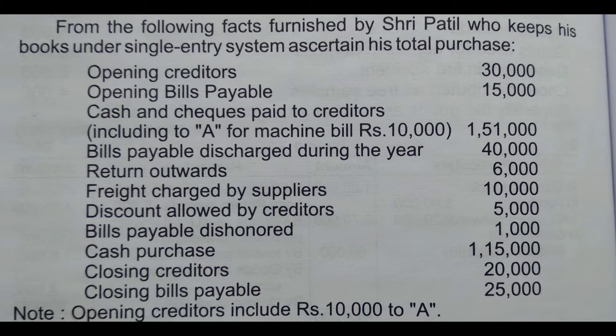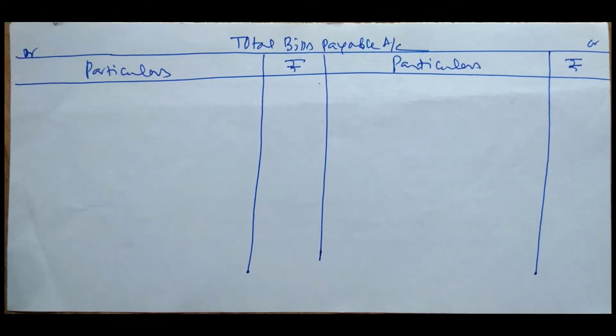In this problem, there are items which are not usual to the creditors account. The first item — amount paid to A, Rs. 10,000, which is included in opening creditors, must be minused. And the amount paid to A for machinery bill, Rs. 10,000, must be deducted from cash and cheques paid to creditors.